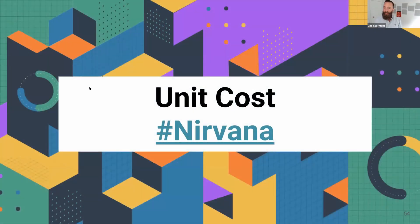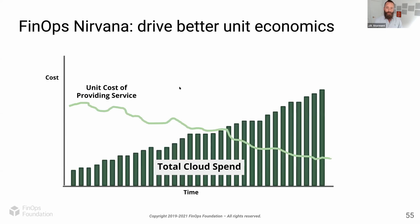I'm going to pass over to Jason Rhodes from Intuit to talk about something that came up a few times today, which is unit cost — how do we start to drive down unit cost even though our total cloud spend might be going up, and attach that spend against the business value that's going.